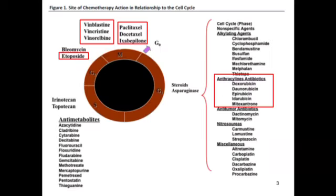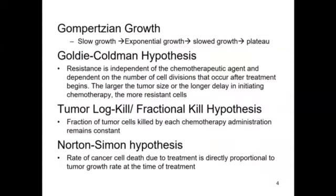Starting at the very beginning, we have the growth cycle. We're not going to go into a lot of detail here, just to point out that cell cycle-nonspecific agents work in all phases of the cell cycle — really because they work on preformed DNA, and that's the anthracycline antibiotics. Then we have other classes: paclitaxel, the vinca alkaloids, and etoposide, which all work in one or two specific cell cycle phases. Chemotherapy works in dividing cells, so it works mostly in the exponential growth phase.